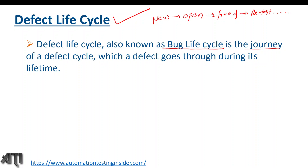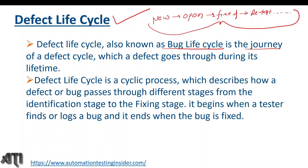These are the various statuses of a defect — whether we are logging it manually using an Excel sheet with a status column, or using a bug tracking tool. We change the status accordingly every time a team works on it. Defect life cycle is a cyclic process which describes how a defect passes through different stages from the identification of the defect to the fixing of the defect. It begins when a tester finds or logs a bug and ends when the bug is fixed.